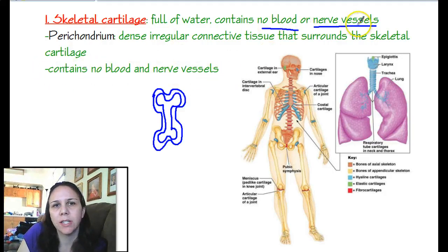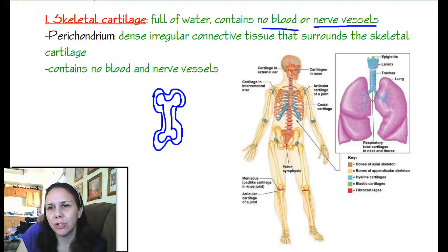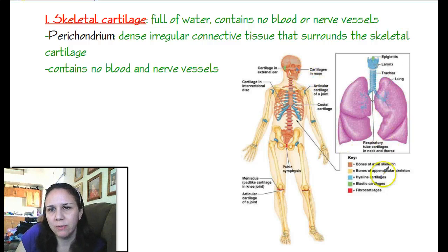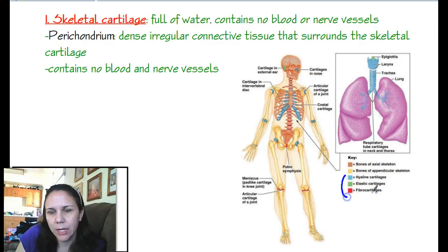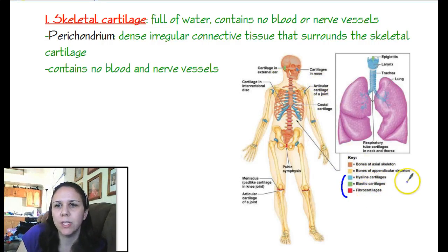It contains no blood and nerve vessels — it says so right there. Here's a picture showing you different types of cartilage. If you look at the blue, green, and red, those are the main ones: hyaline cartilage, elastic, and fibrocartilage. We'll go over each of these and show you where each one is found.